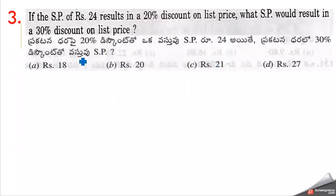Next, third question. If the selling price of 24 results in a 20% discount on list price, what selling price would result in a 30% discount on list price?